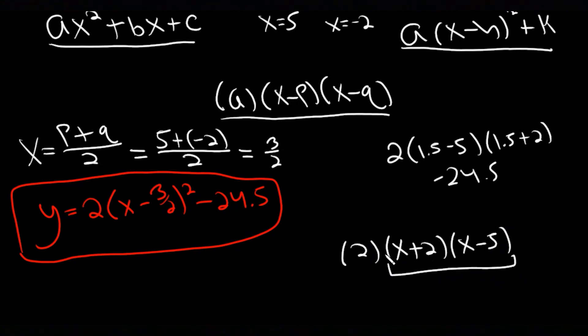You're going to do FOIL here. When you do first, you get x². Outside, you get -5x. Inside gives you +2x. Last gives you -10. This is all in parentheses and I have to distribute the 2 on the outside.